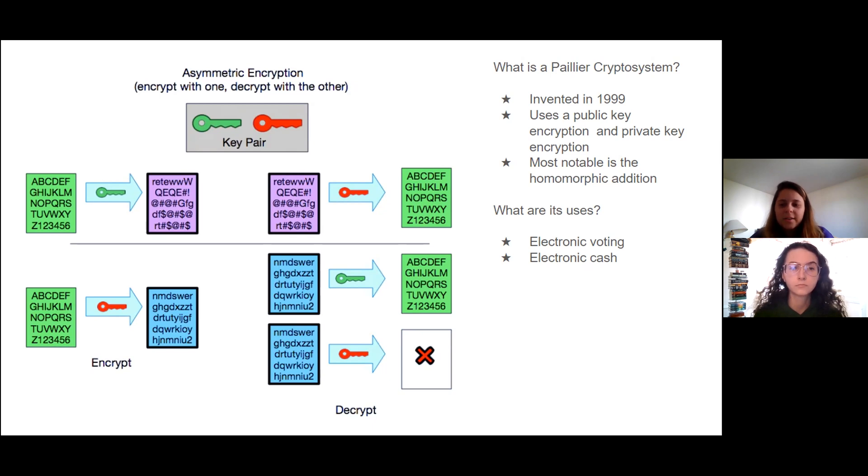In this picture, you can see how the ABCs turn into a jumble of random symbols and letters, which is encryption. And with the use of the private key, the encrypted code can be turned back into the ABCs, which is called decryption.